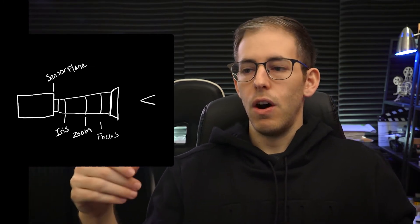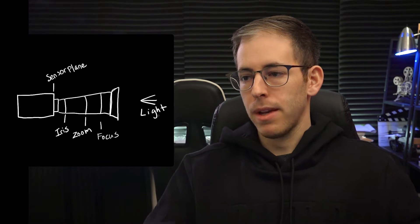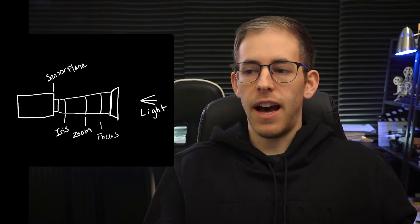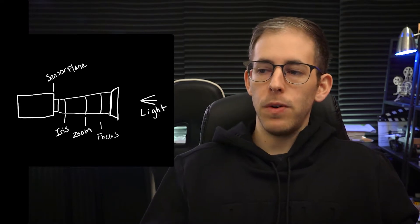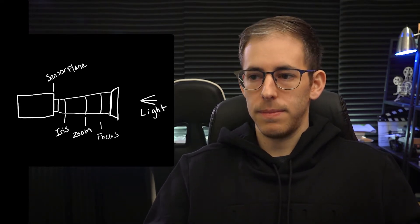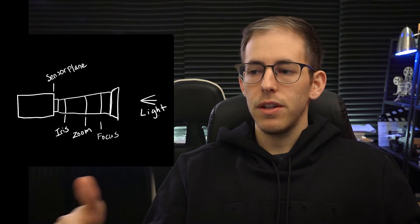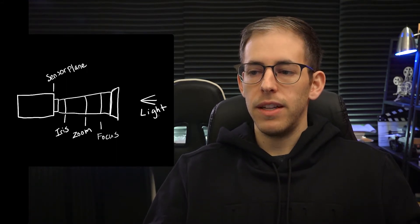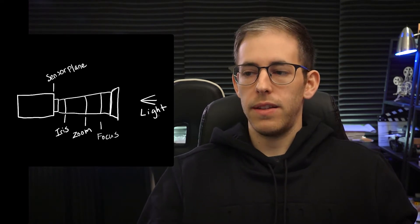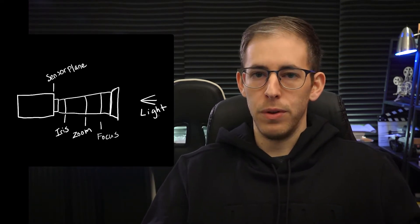Let's break it down. We have the lens, which captures light and evenly distributes this light over a sensor plane. Your average zoom lens has three abilities: focus, iris, and zoom. Focus adjusts where the focus plane should be away from the lens. The iris controls the amount of light allowed into the lens, and the zoom controls the focal length — wide, medium, and telephoto.